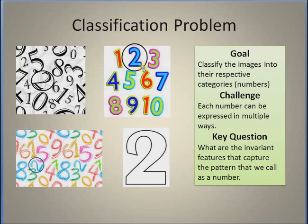For example, the 2 here looks slightly different from the 2 in another image and also from a handwritten number 2. So the key question in this type of classification problem is: what are the invariant features that capture the pattern we call the number 2? And similarly for other numbers like 6.